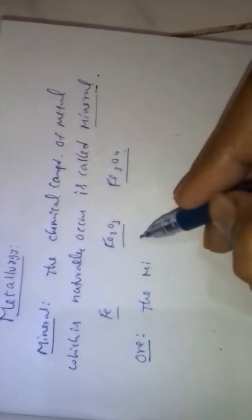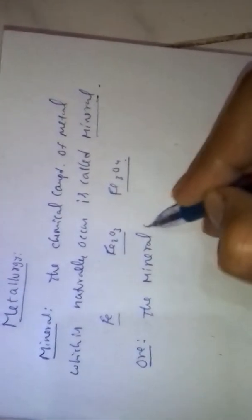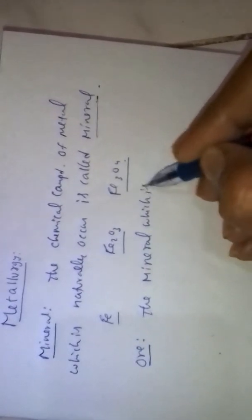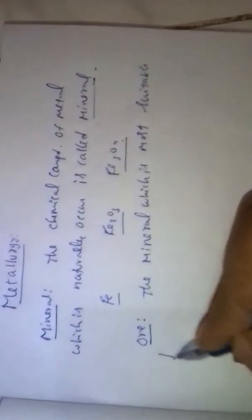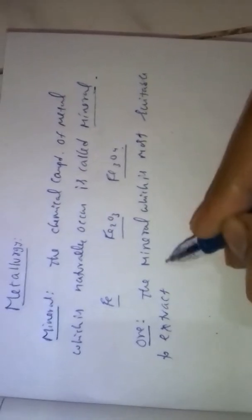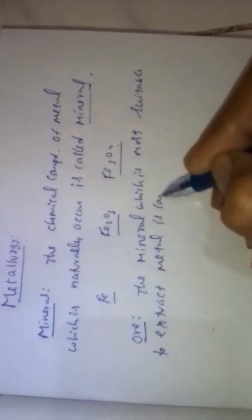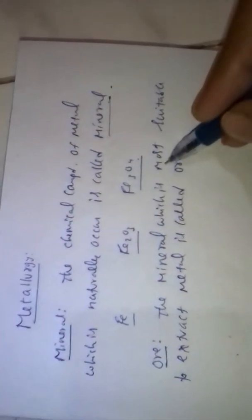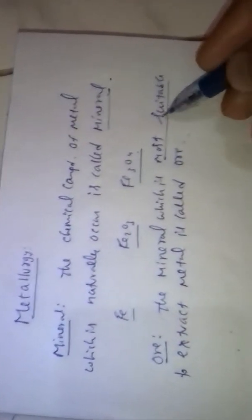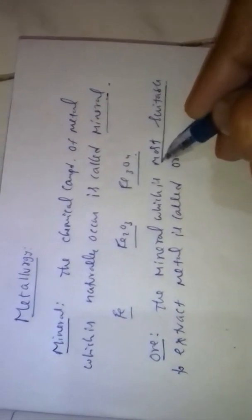The mineral which is most suitable to extract metal is called an ore. Most suitable means we get a higher concentration of metal, and the extraction is cheap — it is low cost.